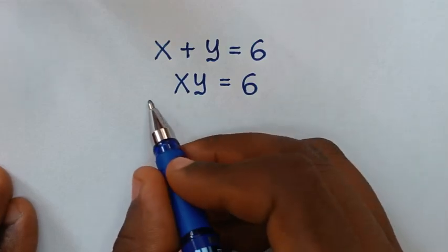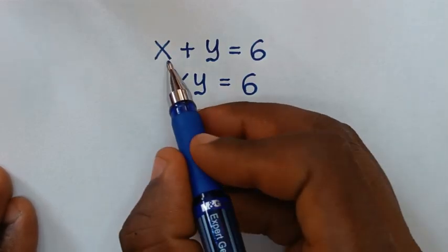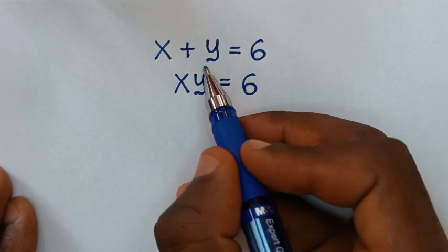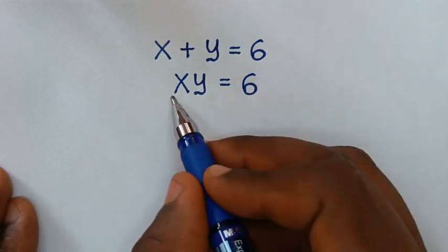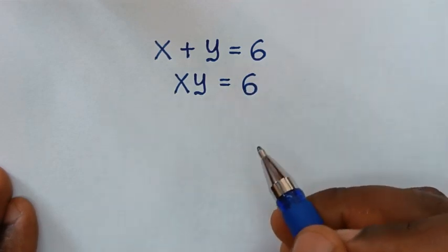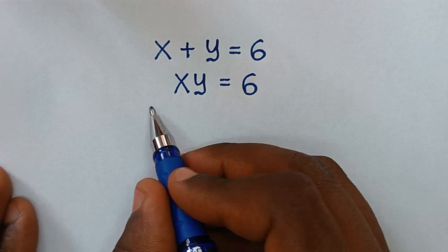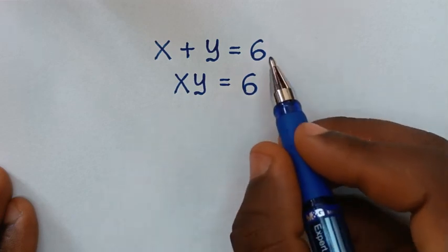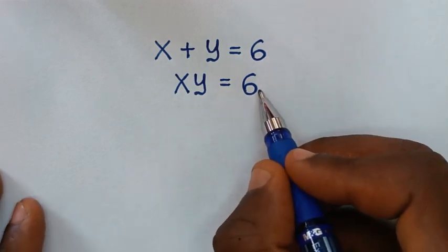You are welcome to solve this math problem which is x plus y is equal to 6, and x times y is equal to 6. We need to find the values of x and y from these two systems of equations.